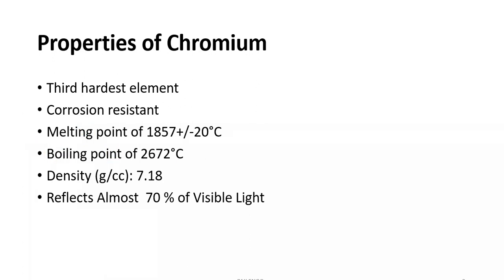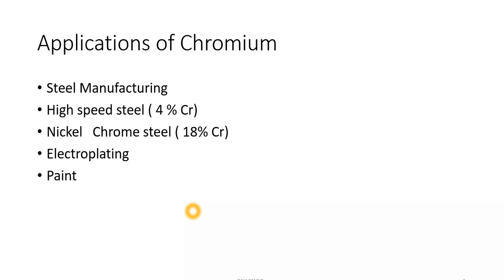Chromium has a melting point of 1857 degrees centigrade and a boiling point of 2672 degrees centigrade. It has a density of 7.18 grams per centimeter cube. Chromium also has the property of reflecting visible light — it reflects almost 70% of visible light, making it ideal for applications where aesthetics are a priority.